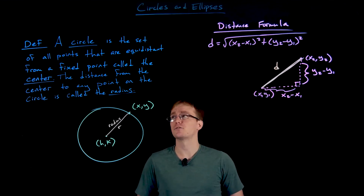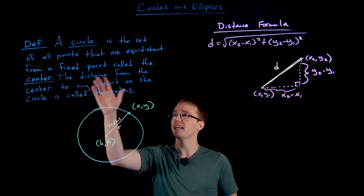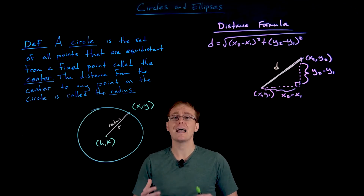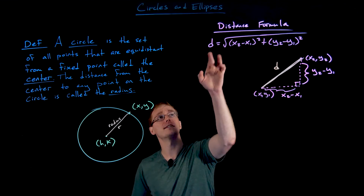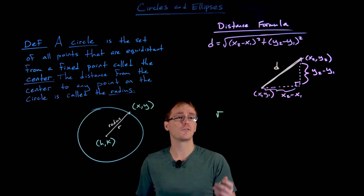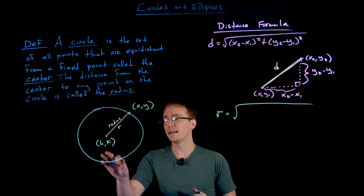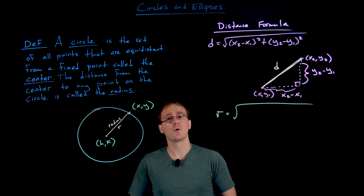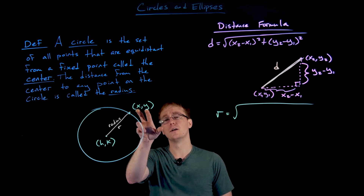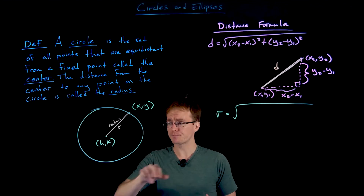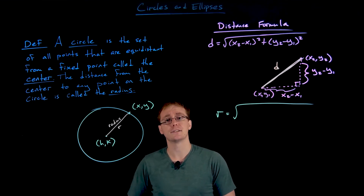Now let's apply our distance formula to the geometric definition of a circle. The distance from the center to any point on the circle gives us the fixed distance we call the radius. So we replace d with r. For the general formula, a point on the circle has coordinates (x, y), and the center is the fixed point (h, k).